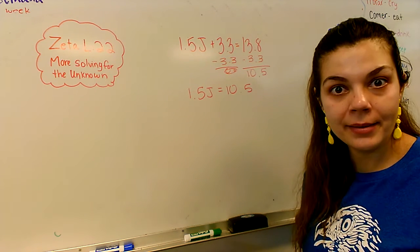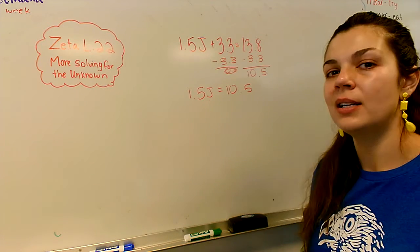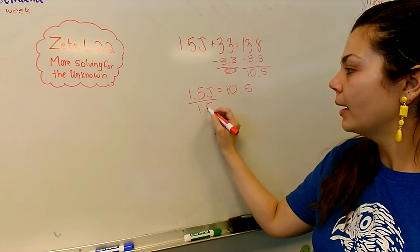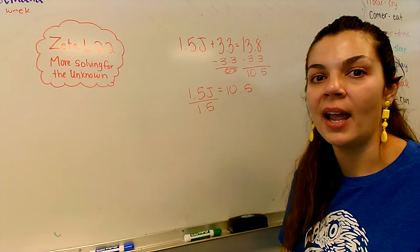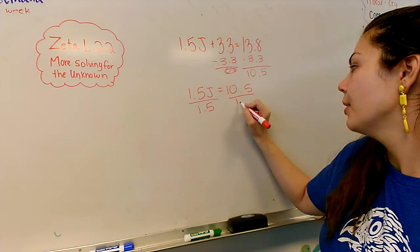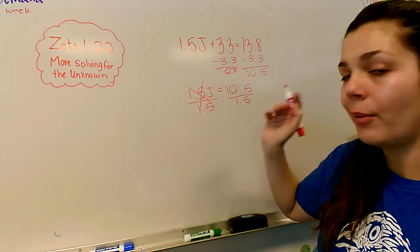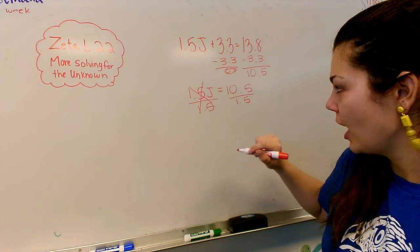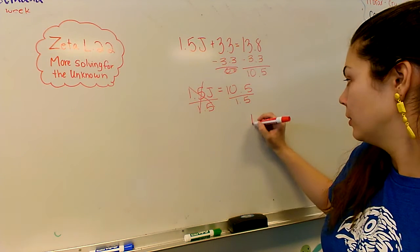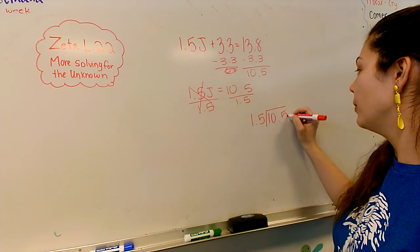Okay. What do I do next? My next step, my number one goal in solving for the unknown is to get my variable alone. I'm now going to divide by 1.5 so my J can be solo. If I do it to one side, I have to do it to the other. 1.5. Okay, those cancel out. 1.5 divided by 1.5 is just one, which is just J. And then I have 10.5 divided by 1.5.